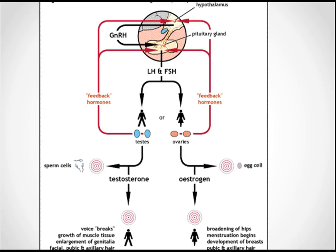Testosterone is produced by the Leydig cells of the testes and is bound to sex hormone-binding globulin, SHBG. Free testosterone is the active moiety at the level of target cells. Testosterone is then either converted to dihydrotestosterone by 5-alpha reductase, or to estrogen by the enzyme aromatase. Both dihydrotestosterone and testosterone attach to nuclear receptors, which then bind to steroid-responsive regions of genomic DNA to influence transcription and translation.